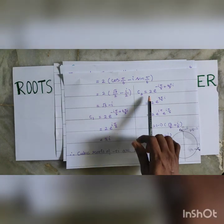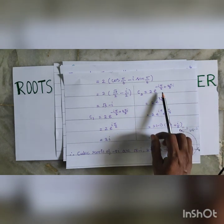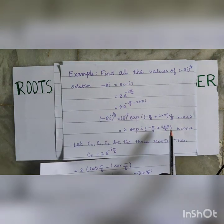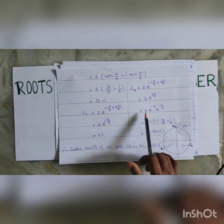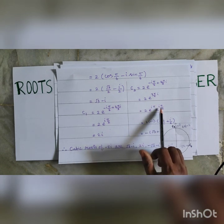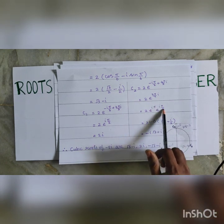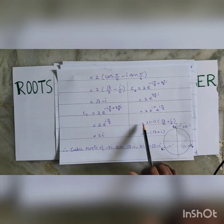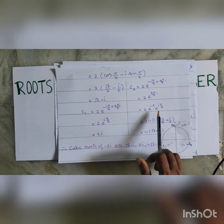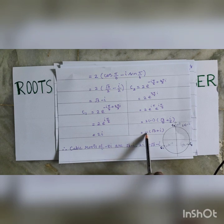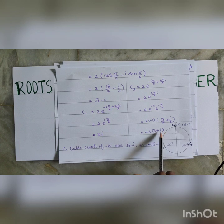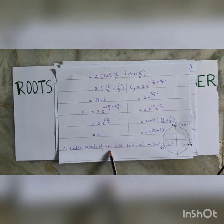Now finding C2. C2 equal to 2 into e power i times minus pi by 6 plus 4 pi by 3, that is putting k equal to 2. This is 2 into e power i pi times e power i pi by 6, splitting 7 pi by 6 as pi plus pi by 6. Now e power i pi is minus 1, therefore it equals 2 into minus 1 into cos pi by 6 plus i sin pi by 6. Cos pi by 6 is root 3 by 2 and sin pi by 6 is 1 by 2, giving us minus root 3 minus i. Therefore the cubic roots of minus 8i are root 3 minus i, 2i, and minus root 3 minus i.